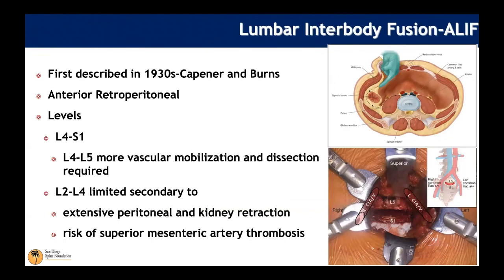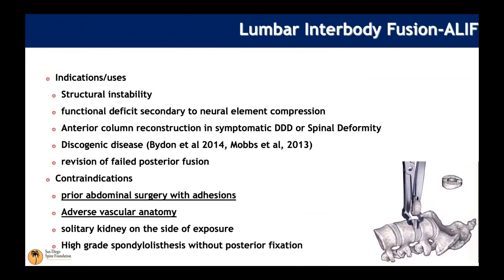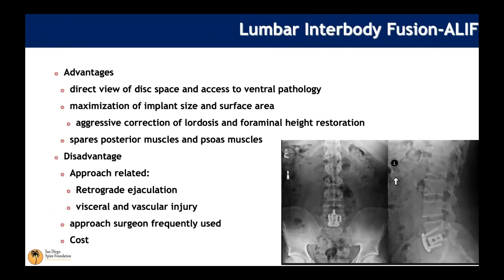Anterior lumbar interbody fusion, first described in the 1930s, is an anterior retroperitoneal approach. Indications include structural instability, anterior column reconstruction for spinal deformity, discogenic disease, and revision of failed posterior fusion. Contraindications include adverse vascular anatomy, significant prior abdominal surgeries with adhesions, and it is more difficult to perform in the upper lumbar spine due to vascular retraction and risk of renal injury.